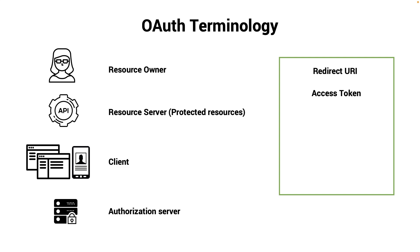Access Token — this is probably one of the most important parts of all OAuth flows. Access tokens are what applications use to make API requests on behalf of a user. The access token represents the authorization of a specific application to access a particular part of user data.